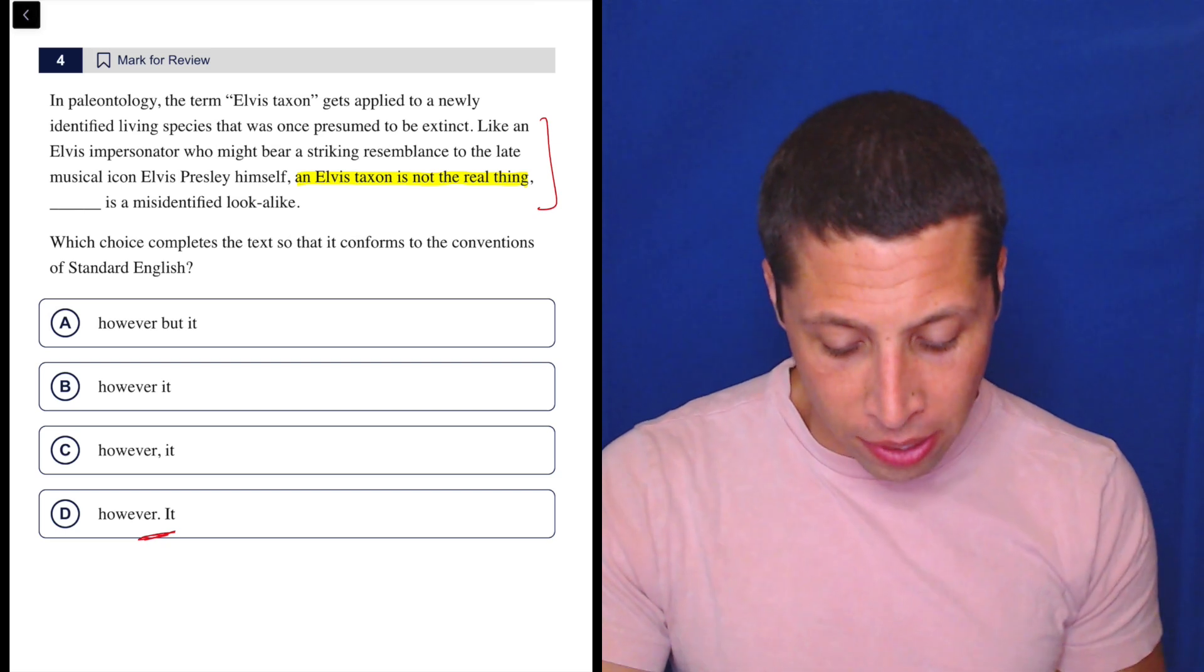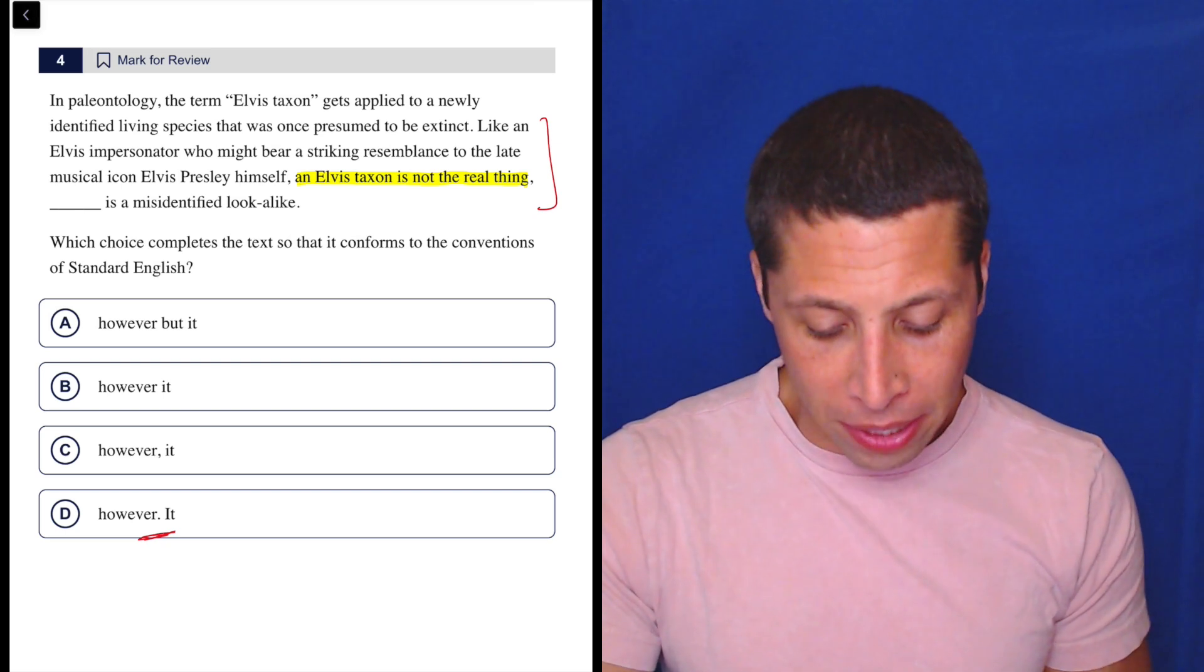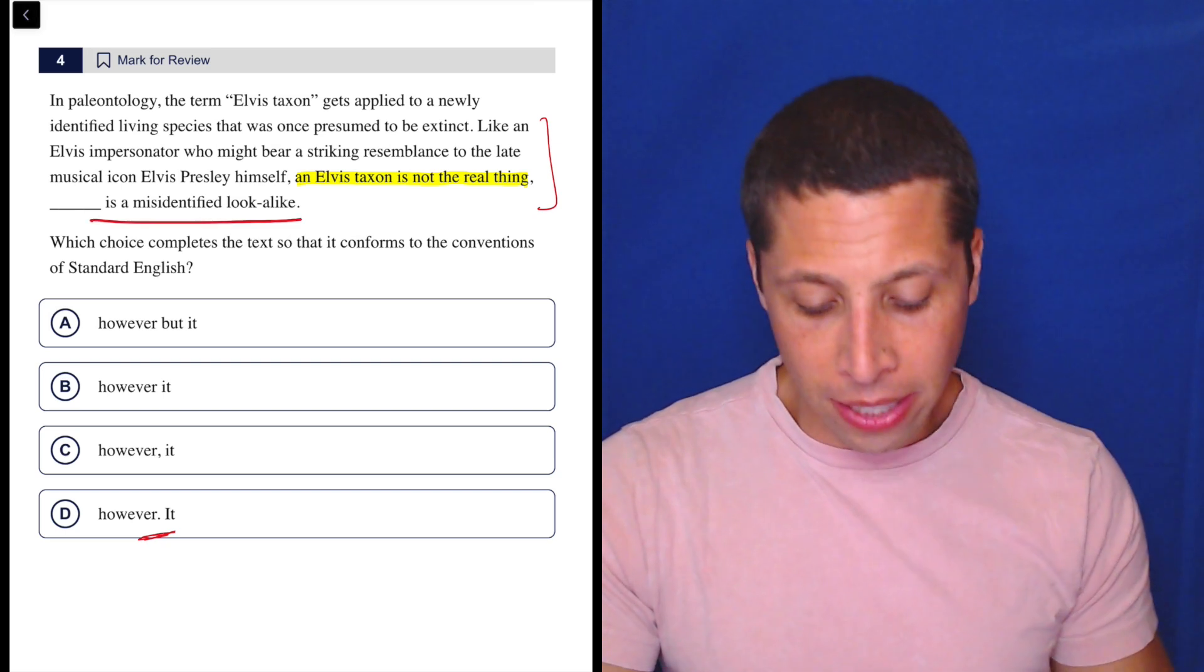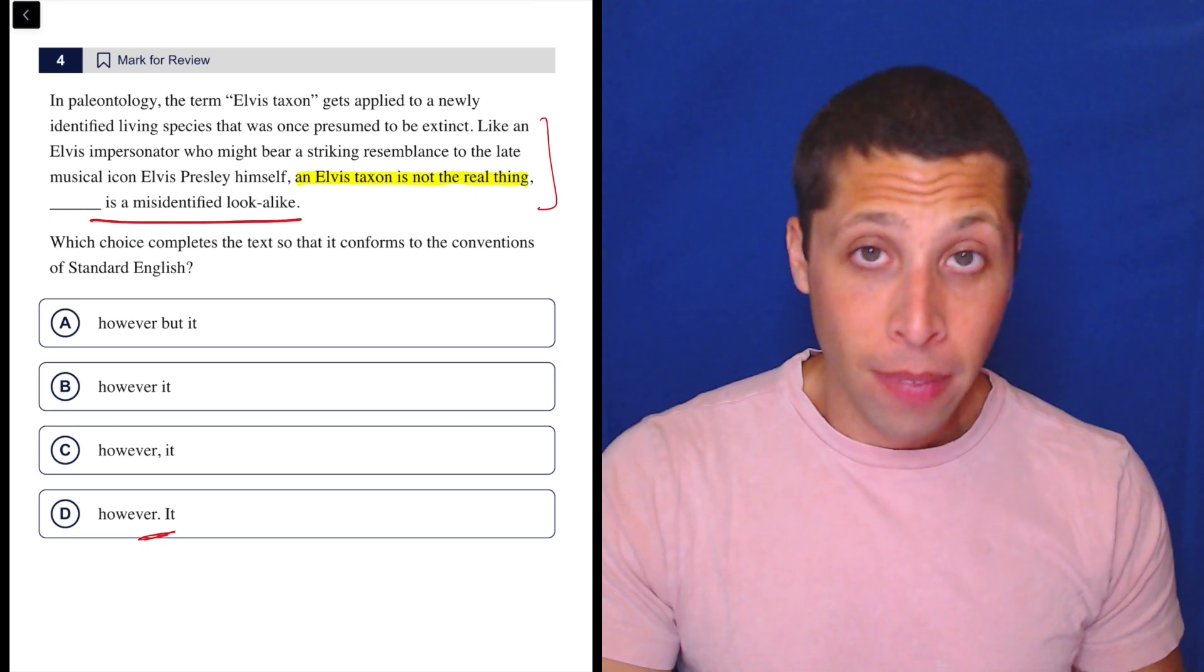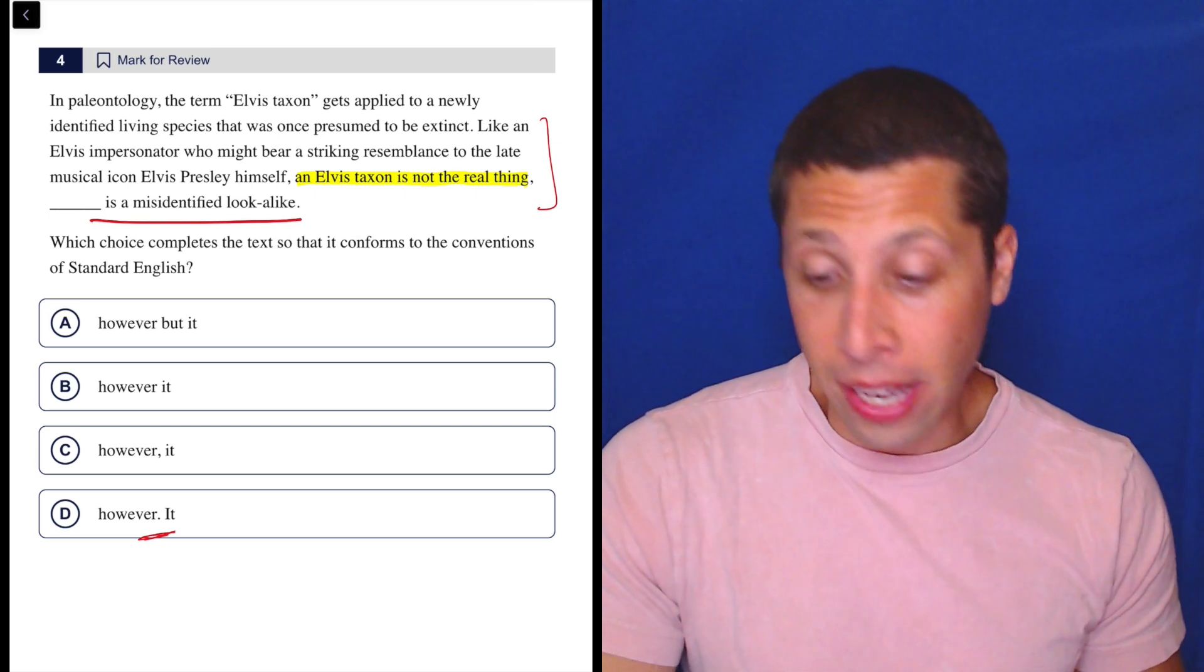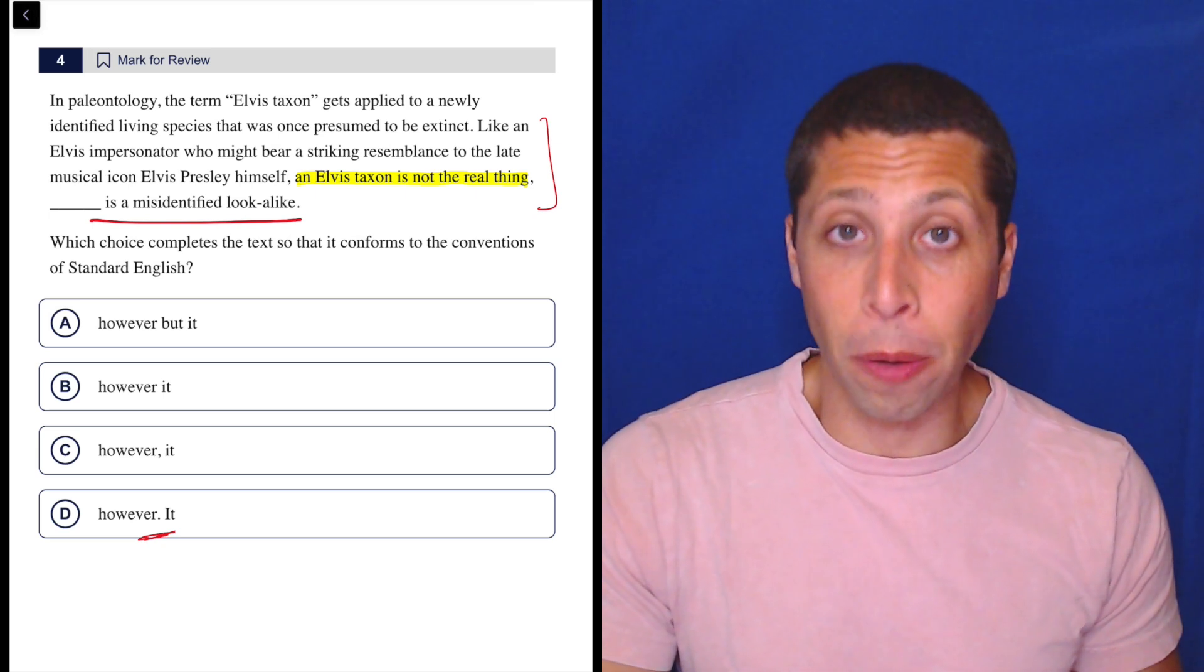Now we're listening to see if this other part, starting with it, is going to be a sentence as well. It is a misidentified lookalike. That's also a sentence. It is my subject, is is my verb. It's about as simple as a subject verb pair as we can get.